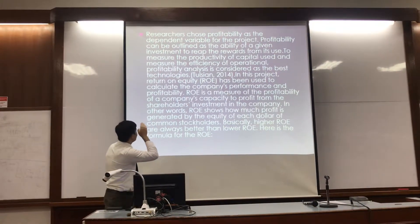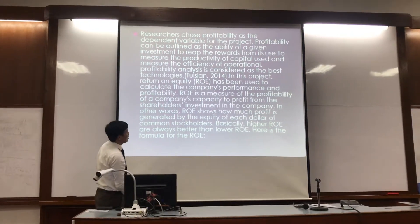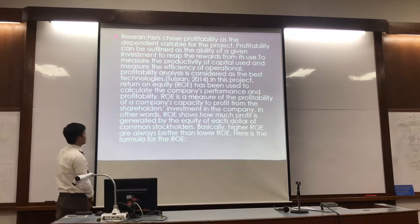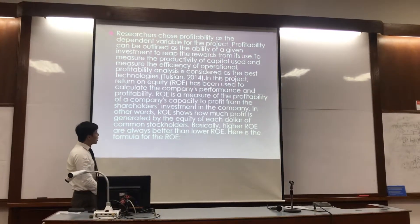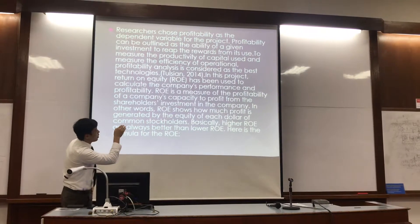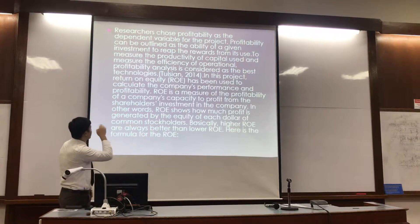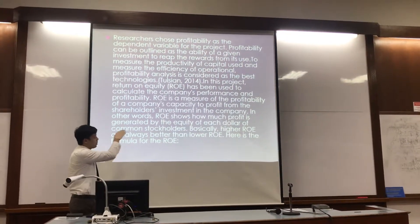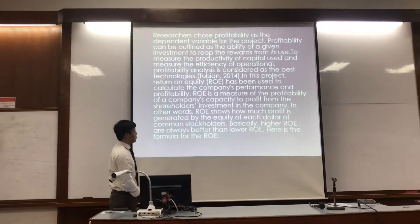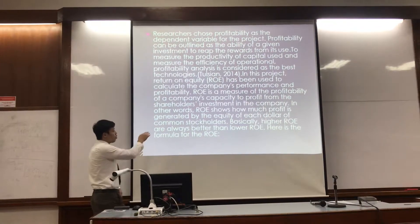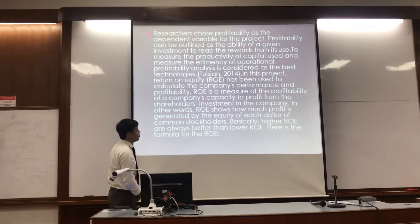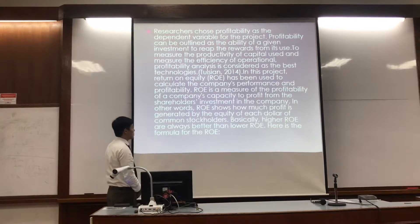Three means ensures the production of the capital U.S. and the integrity of the operations. We can learn that ROE is the main measure of the probability of compliance and capability to be performed from the shareholders' investment in the compliance. In other words, ROE shows how much performance is given by the credit of the other dollars for the combination.